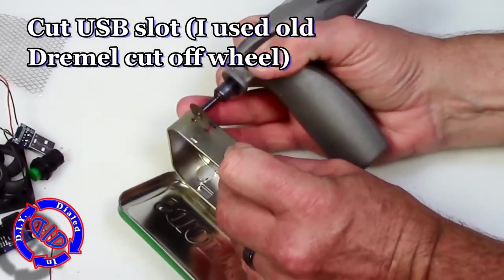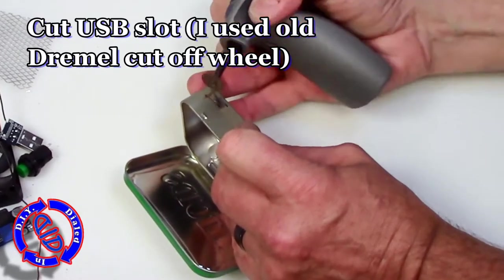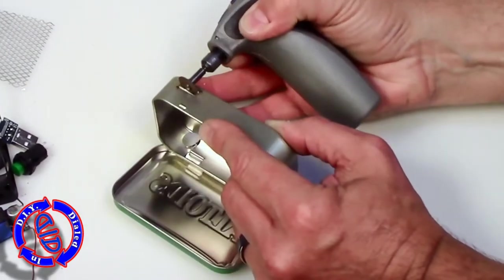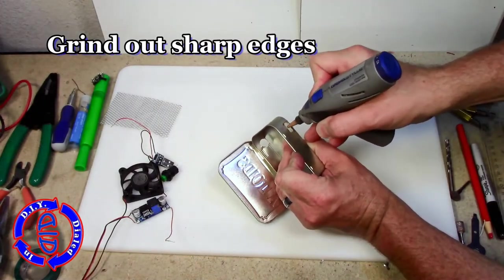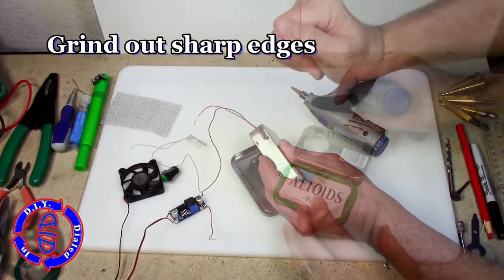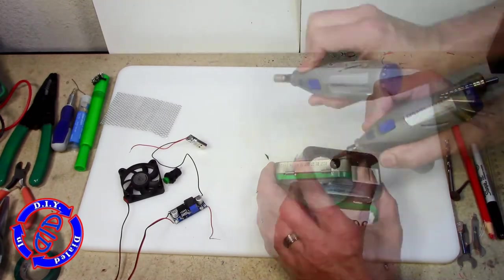I grabbed my Dremel and an old cutoff wheel that had already been worn down to a much smaller size which made it perfect for cutting this rectangle to put the USB through. This will have some pretty sharp edges and corners so you want to make sure to grind and sand all of those down till they're smooth so you don't get yourself or anything else catching up on those and getting cut.